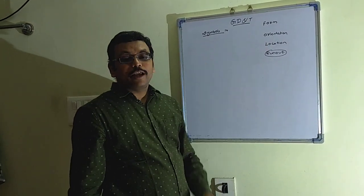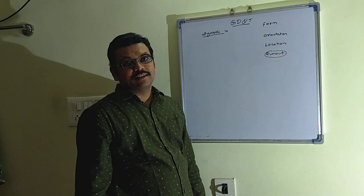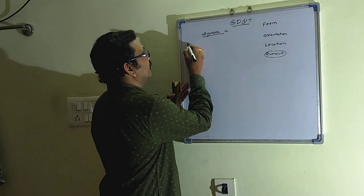So this is about the form, orientation and location. In these categories there are different types of GD&Ts. First one is flatness.